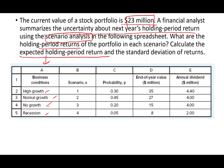Compute the expected holding period return and the standard deviation of returns. We are given four scenarios and their probabilities — they always add up to 100%. We are given the expected year-end value of the portfolio under different scenarios, as well as the annual dividend yield in millions for each scenario. To work this problem I'm going to be using an Excel sheet to make it easier to show you the computation.